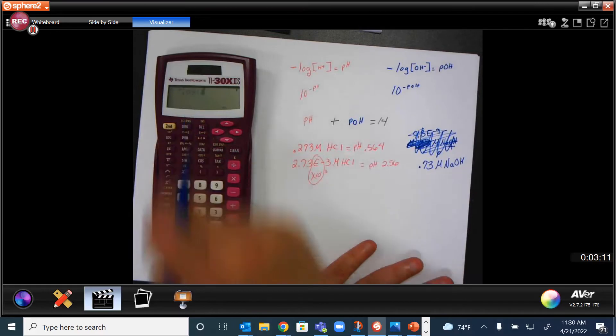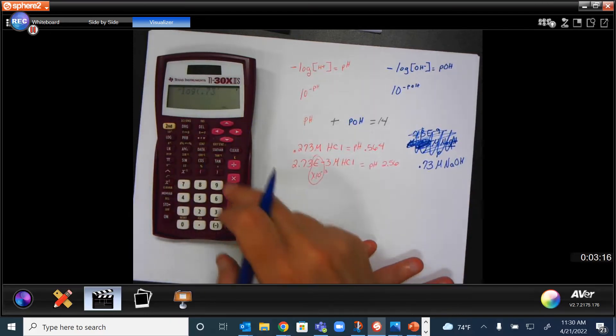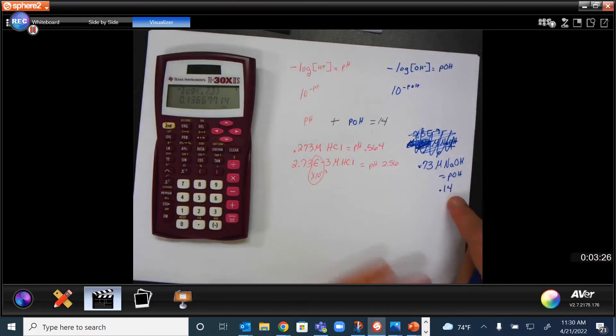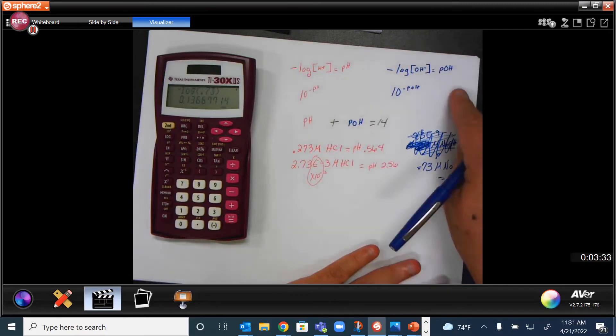Negative log 0.73, close your parentheses, you get a pOH of 0.14. The pOH is 0.14, because the only thing you can find from a base is a pOH.